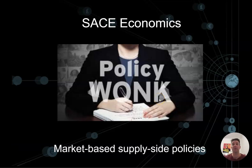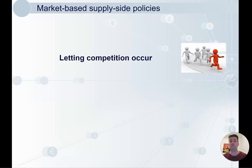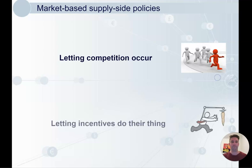Today we're looking at market-based supply side policies. From our last video, I briefly introduced these — that's where the government removes itself from the economy a little bit and makes it more like a free market. The benefits of doing that is that we let competition occur and we let incentives do their thing without the government manipulating those incentives too much.